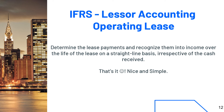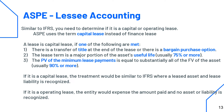Now let's talk about how to do lessee accounting for ASPE. It's similar to lessor accounting in IFRS — you first need to determine if there is a capital or operating lease. Note that ASPE uses the term capital lease instead of financing lease, and this is a key point: if you use the wrong terminology in your case, the marker might think you're applying the wrong standard.